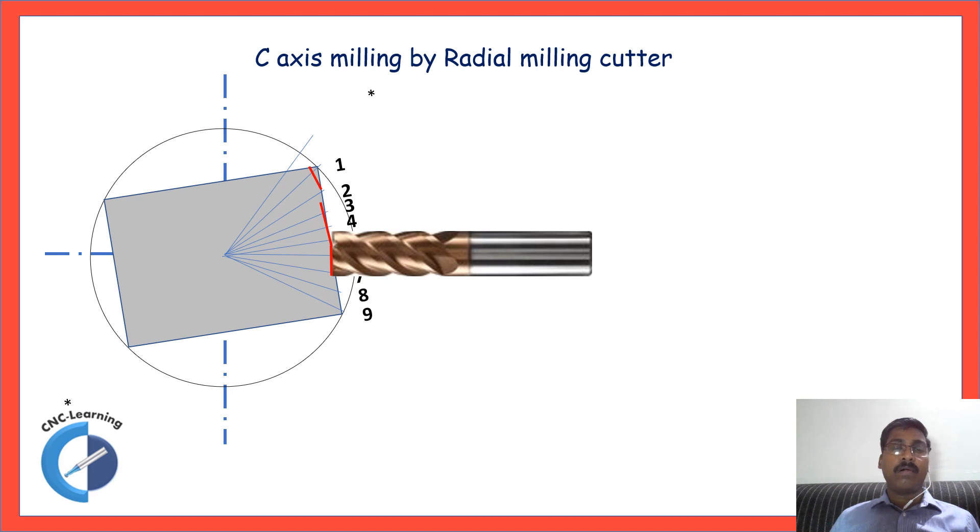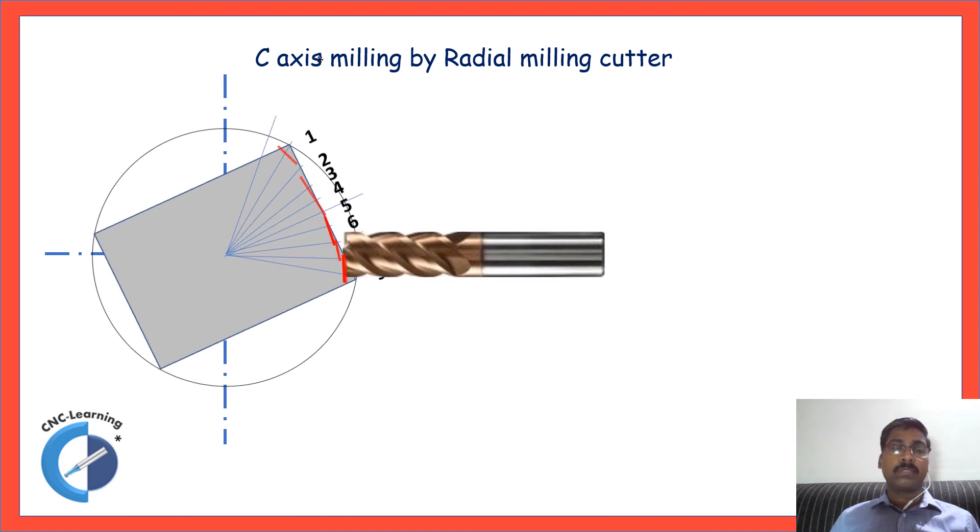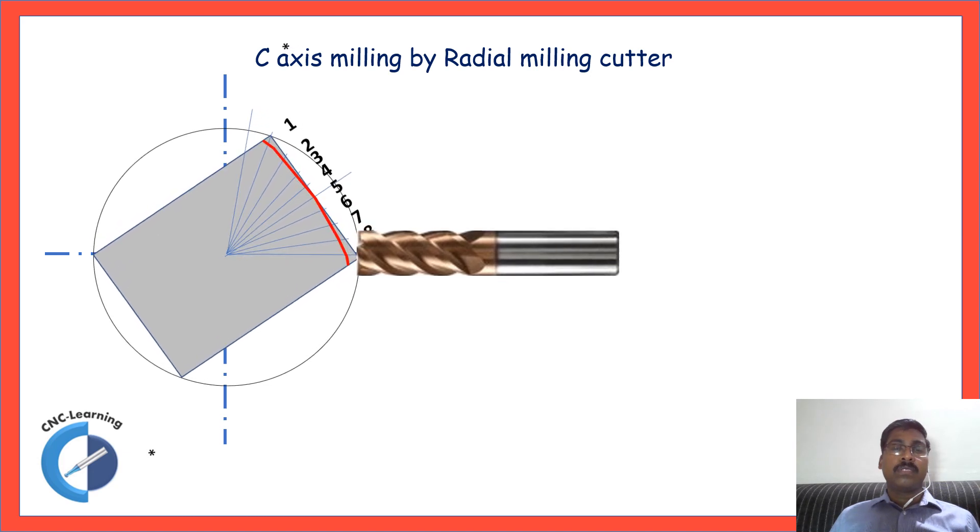The red color denotes extra material removed. So, this is the limitation of C axis milling using a radial milling cutter. So, what is the solution?